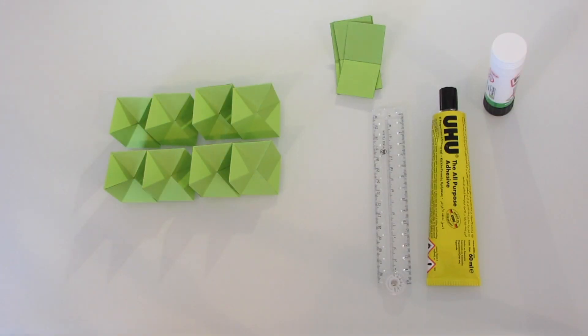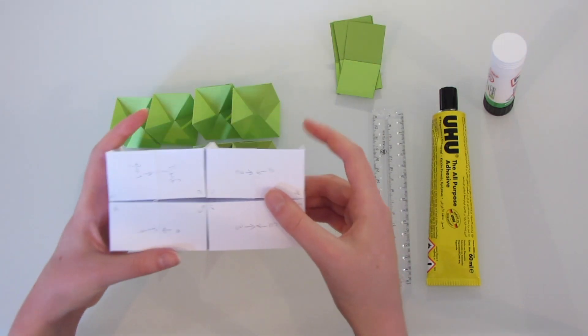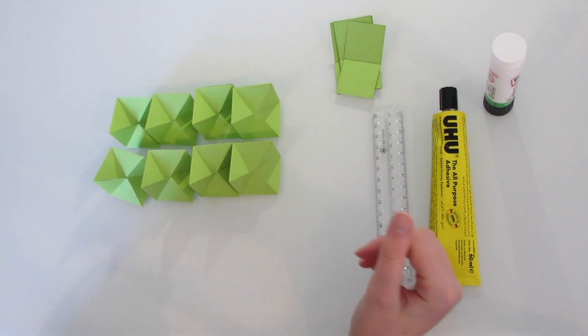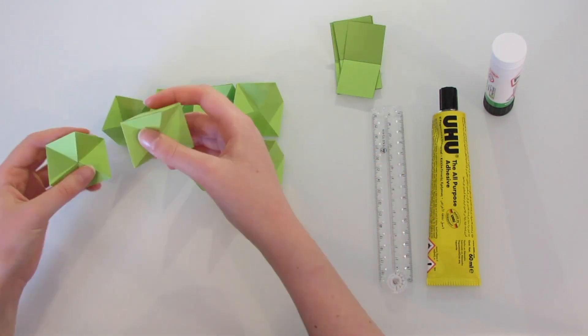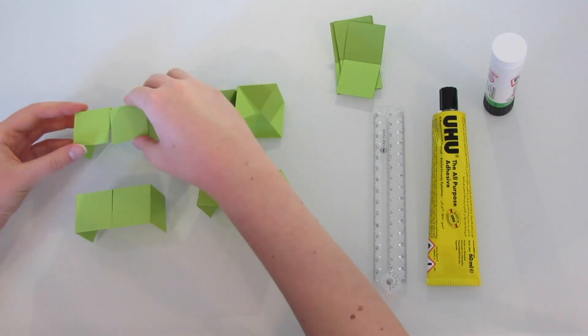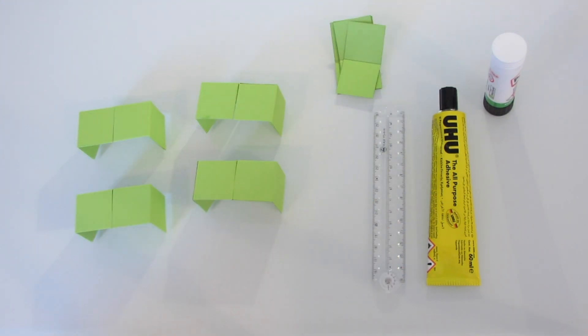So once we've made the eight modules, it's time to attach them together. We'll attach each piece by gluing these double square pieces over the top, as you can hopefully see on the model. And the first ones we're going to attach is we're just going to attach them into four pairs.